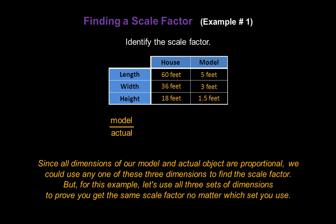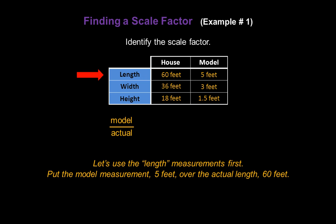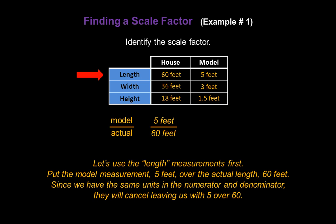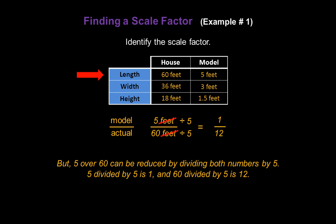But for this example, let's use all three sets of dimensions to prove you get the same scale factor no matter which set you use. Let's start with the length measurements. Put the model measurement, 5 feet, over the actual length of 60 feet. Since we have the same units in the numerator and denominator, they cancel, leaving us with 5 over 60. We can reduce by dividing both numbers by their common factor of 5: 5 divided by 5 gives us 1, and 60 divided by 5 gives us 12. So our scale factor is 1/12.